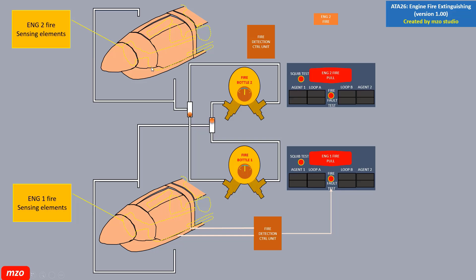Here this is the ADS 72 fire extinguishing system. For the engine fire detection loop, it has Loop A and Loop B. These loops have the fire sensing element. This is the fire detection control unit. When the fire sensing element senses the fire signal — for example engine 2 fire like this — the fire detection system sends the signal to the fire detection control unit.